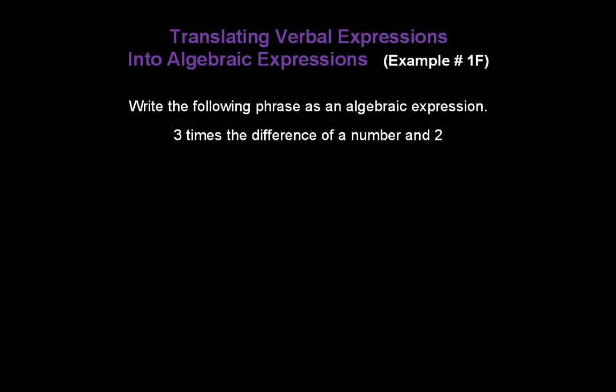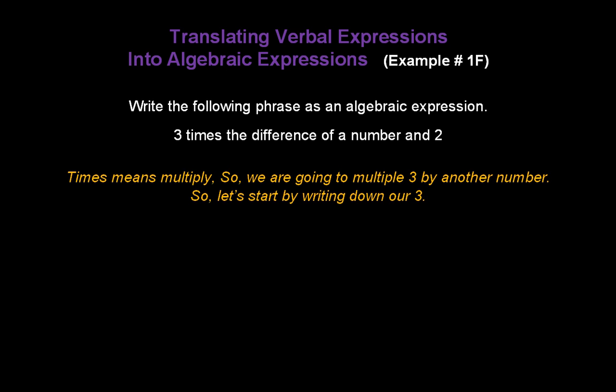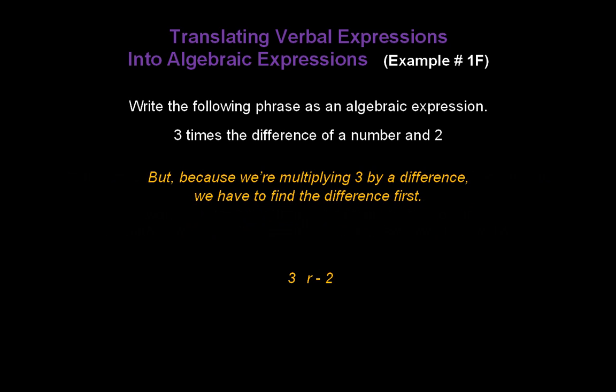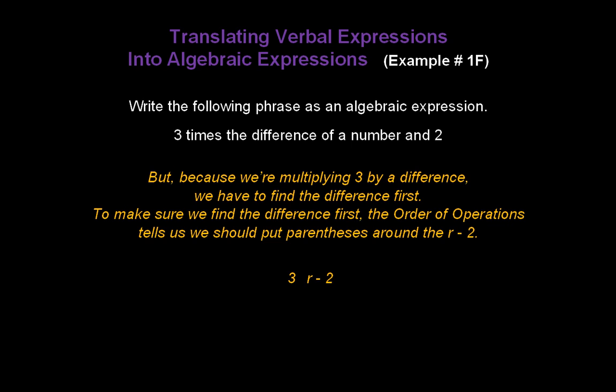3 times the difference of a number and 2. Times means multiply. So we're going to multiply 3 by another number. The 3 is being multiplied by a difference. The difference of a number, we can use variable r, and 2. So r minus 2. Because we're multiplying 3 by a difference, we have to find the difference first. So we put parentheses around the r minus 2. That's our algebraic expression.